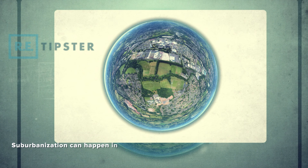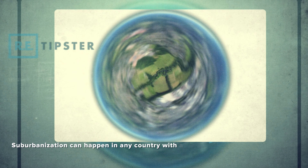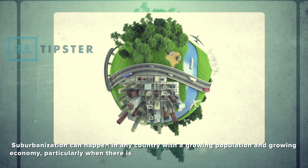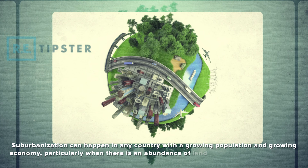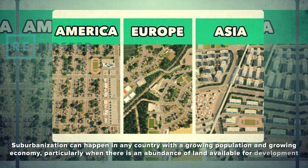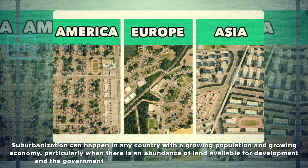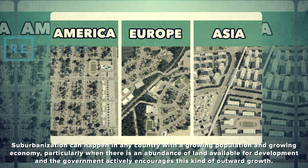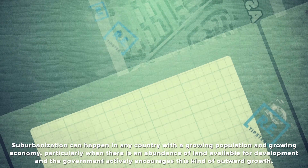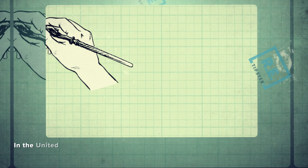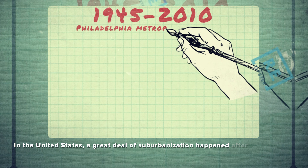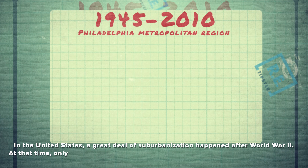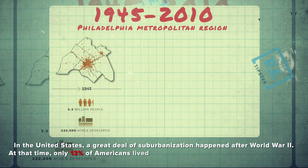Suburbanization can happen in any country with a growing population and a growing economy, particularly when there is an abundance of land available for development and the government actively encourages this kind of outward growth. In the United States, a great deal of suburbanization happened right after World War II.